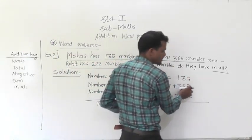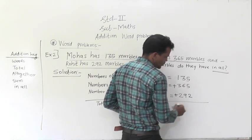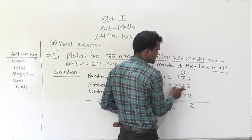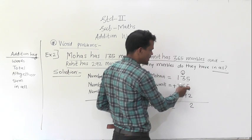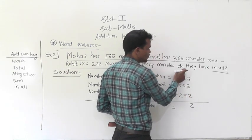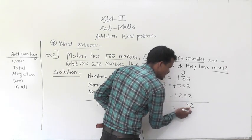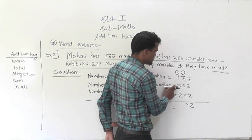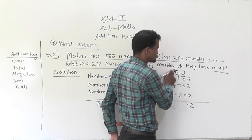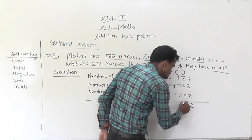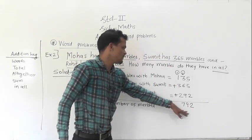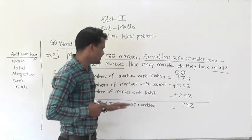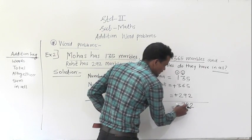Add these three numbers to get the total marbles. Ones place: 5 plus 5 is 10, plus 2 is 12. Write 2 at the ones place and carry 1. Tens place: 3 plus 6 is 9, plus 9 is 18, plus 1 carry is 19. Write 9 and carry 1. Hundreds place: 1 plus 3 is 4, plus 2 is 6, plus 1 carry is 7. So 792 is the sum of these three numbers. Total number of marbles is equal to 792.